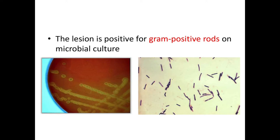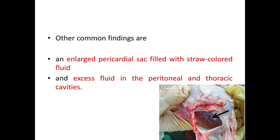Other common findings are an enlarged pericardial sac filled with straw-colored fluid, as seen in this picture. Sometimes excess fluid can also be seen in the peritoneal and thoracic cavities.